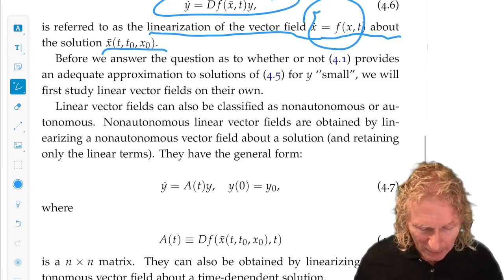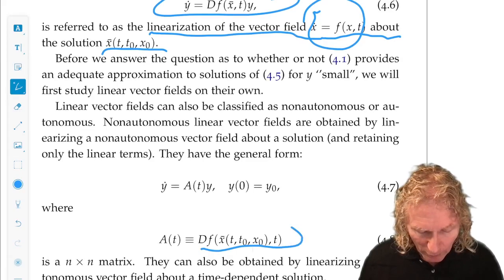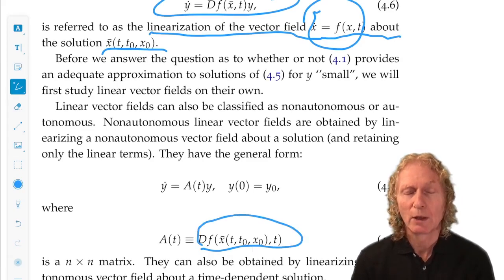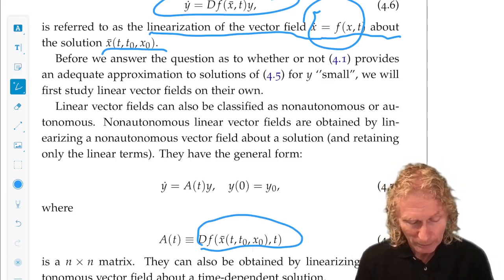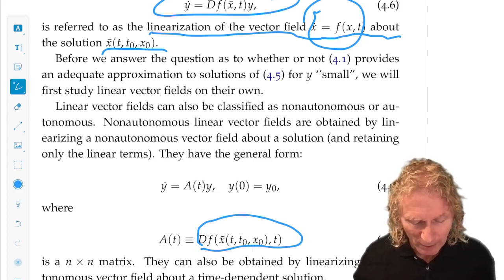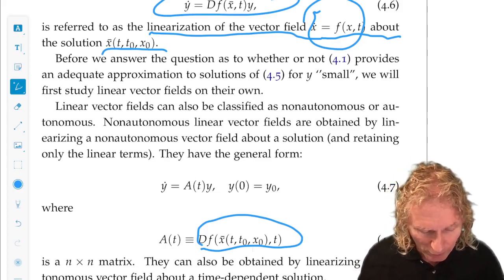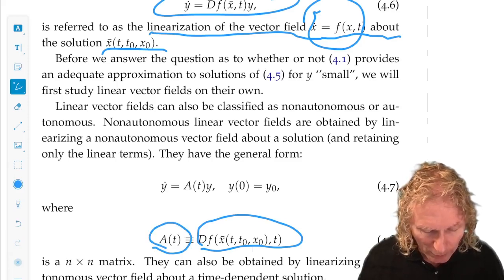Okay, this Jacobian, here's all the information evaluated on a specific solution, X̄ of T, T₀, X₀, comma T, is a big thing to write down and carry around in the notation. We're just going to call that A of T at the moment. So, the linear equation looks like this. It's a non-autonomous linear equation.